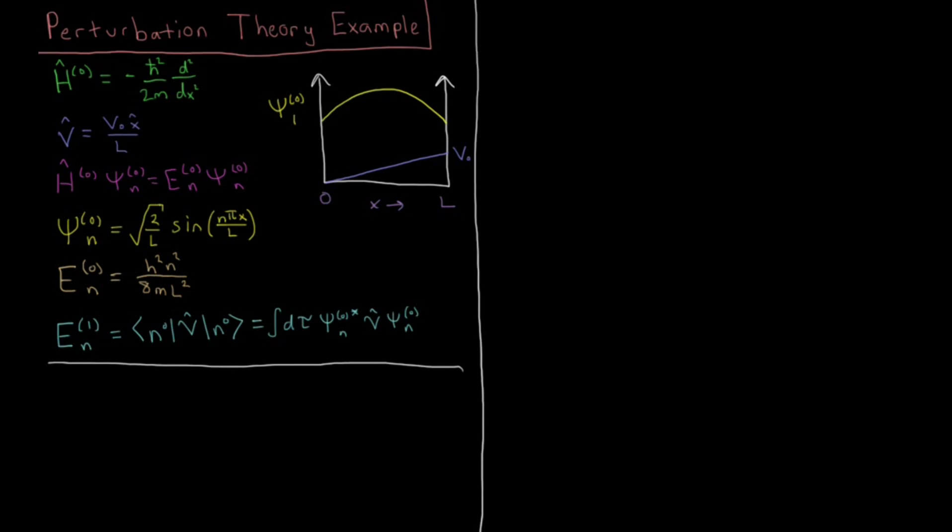In this video we're going to apply first order perturbation theory to the particle in a slanted box. In our particle in a box model, our total Hamiltonian would have just been the kinetic energy, minus h-bar squared over 2m second derivative with respect to x.